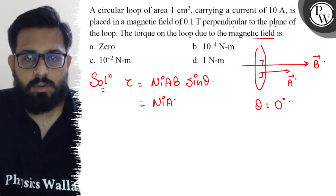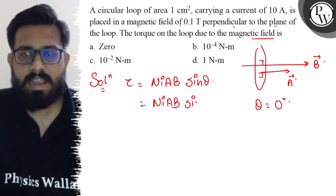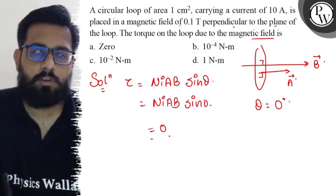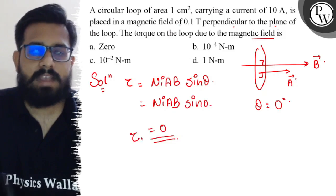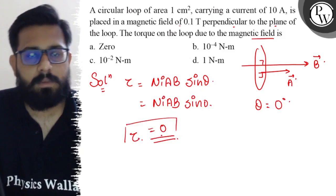If you put the value 0 here, it comes out to be sin(0°), and sin(0°) we all know is zero. So sin(0) comes out to be 0 and the whole value of the torque comes out to be 0.